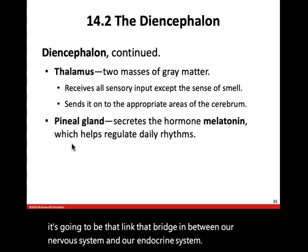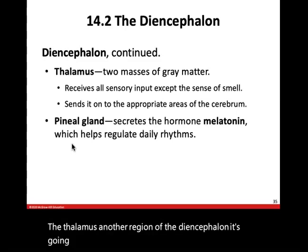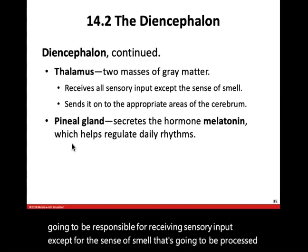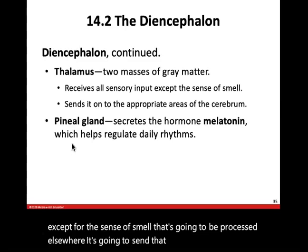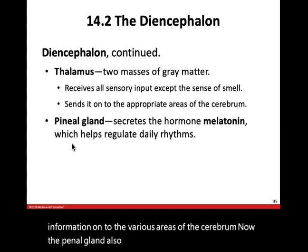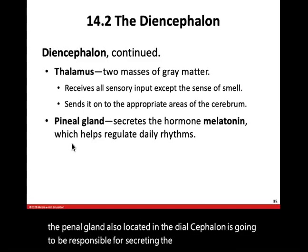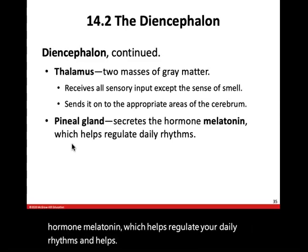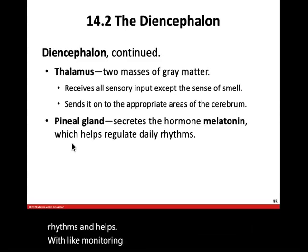The thalamus, another region of the diencephalon, consists of two masses of gray matter. It's responsible for receiving sensory input — except for the sense of smell, which is processed elsewhere — and sends that sensory information on to the various areas of the cerebrum. The pineal gland is responsible for secreting the hormone melatonin, which helps regulate daily rhythms and sleep.